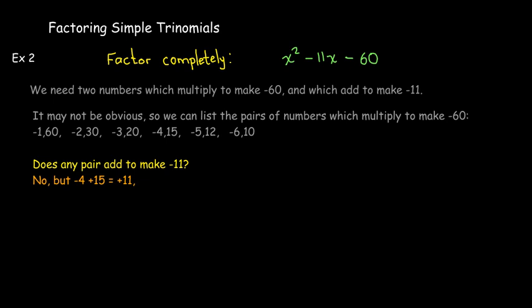That does not mean we can't factor it — it just means we really didn't list all of them. I could have negative 1 times 60, but it could have been 1 times negative 60. I could have 2 times negative 30, 3 times negative 20, and so on — just one of them has to be negative, one has to be positive. I don't get negative 11, but if I add negative 4 and positive 15, I get positive 11.